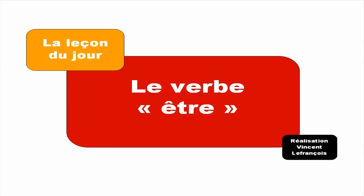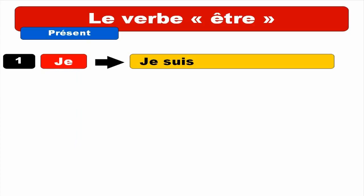So, first form for JE, it's JE SUIS. You can notice that the final S is not pronounced. JE SUIS. Repeat. JE SUIS. OK?